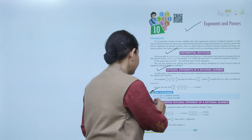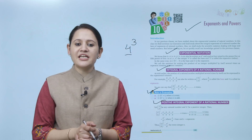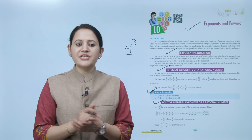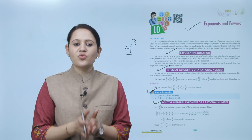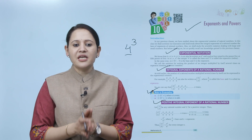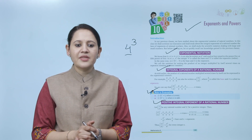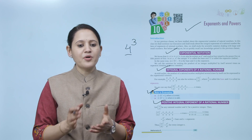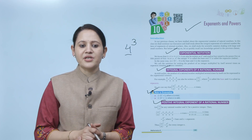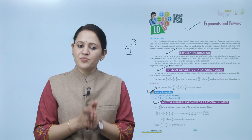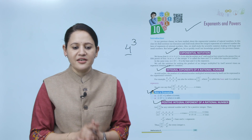Next is positive integral exponent of a rational number. Let a/b be any rational number and n be a positive integer. Then (a/b) to the power n equals (a/b) multiplied by (a/b) ... n times, which equals a to the power n upon b to the power n. Here a/b is the base and n is the exponent. Thus, (a/b) to the power n can be written as a^n / b^n for every integer n.